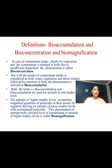We now discuss the definitions of bioaccumulation, bioconcentration and biomagnification. When contaminant intake occurs chiefly by respiration and is retained in the body due to insufficient depuration, the phenomenon is called bioconcentration. If all modes of contaminant intake — food, water, respiration and direct contact — are considered, the phenomenon is referred to as bioaccumulation. Both terms apply to animals in one trophic level only. When animals of higher trophic levels accumulate magnified quantities of pesticides by consuming animals of lower trophic levels, this is called biomagnification.